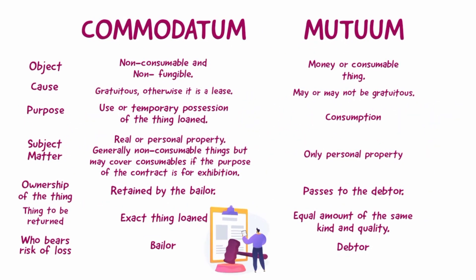Commodatum versus mutuum. First, the object of commodatum is non-consumable and non-fungible, while the object of mutuum is money or consumable things. Second, the cause of commodatum is gratuitous — otherwise it is a lease — while the cause of mutuum may or may not be gratuitous. Third, the purpose of commodatum is the use or temporary possession of the thing loaned, while the purpose of mutuum is consumption.